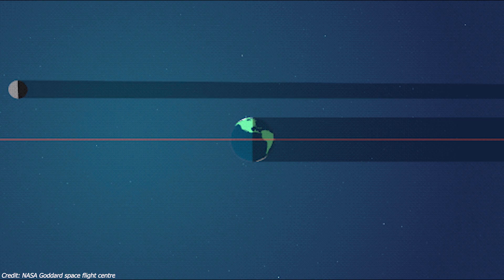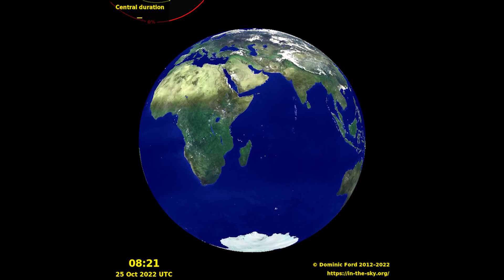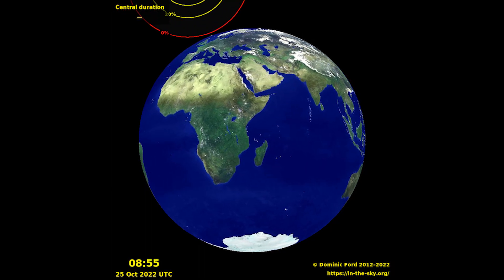However, the umbra doesn't always hit the Earth due to slight misalignment of the moon's orbit. In such cases, if only the penumbra falls on Earth, only partial eclipses can be seen.